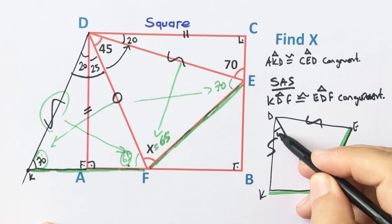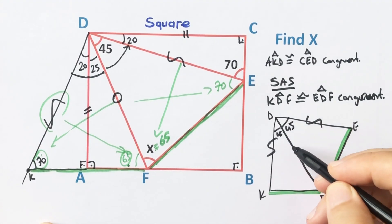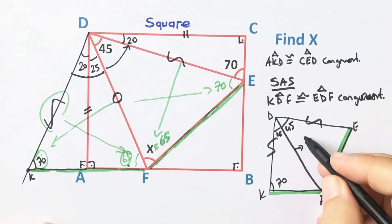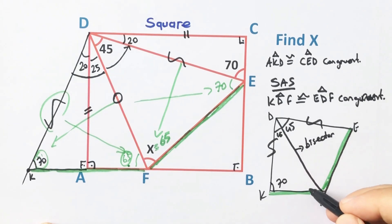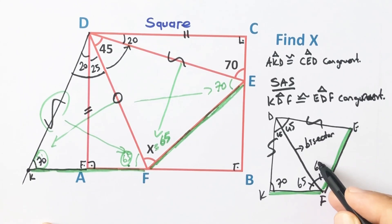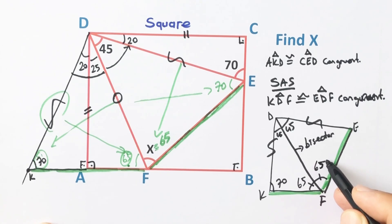This quadrilateral is a kite, right? So we know that these two angles is 45 degrees and here is 70 degrees. In a kite, if we connect vertices we get a bisector line, here. So these two angles must be equal. Therefore x is going to be 65 degrees.